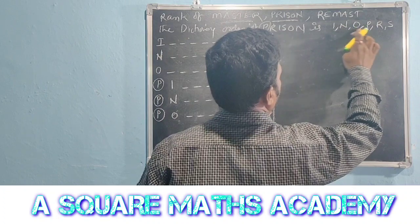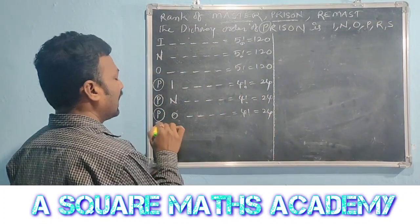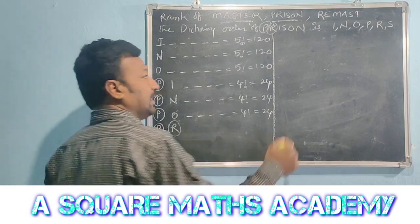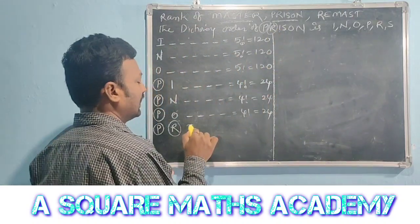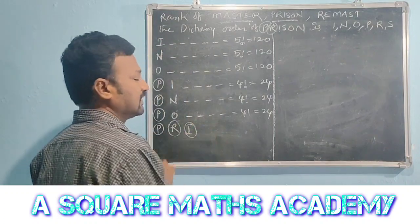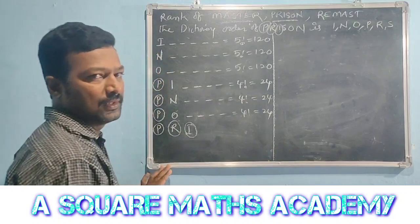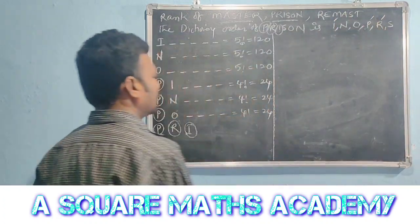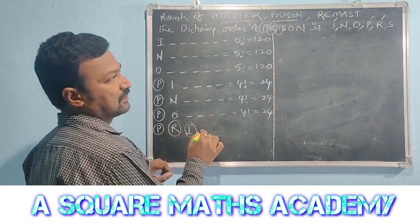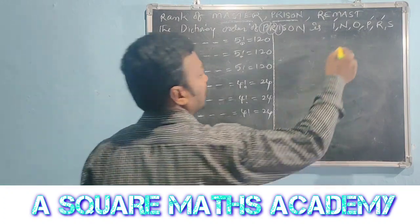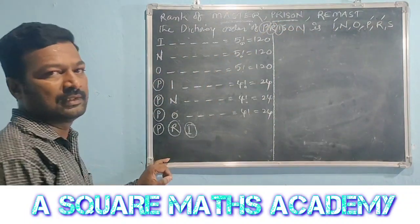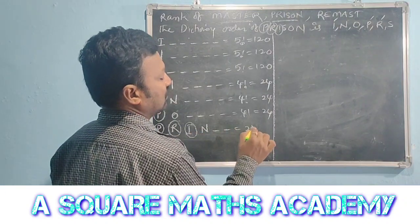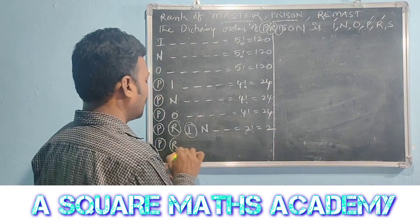Next is P-R prefix. Fix P and R. The remaining letters are I, N, O, S. The letter in PRISON after P-R is I. Now for words P-R-I, the 4th letter: letters N and O come before S. That gives 2 factorial equals 2 arrangements each.